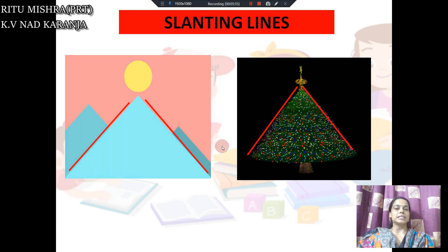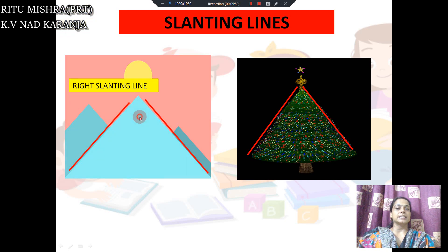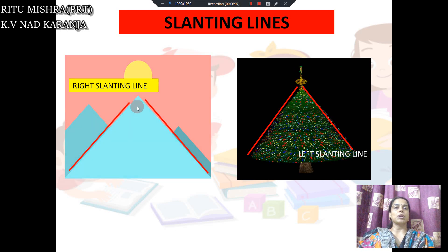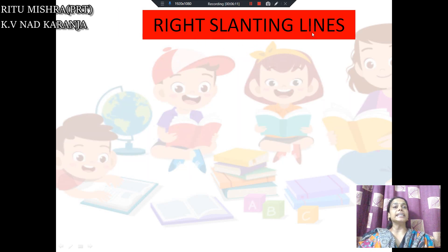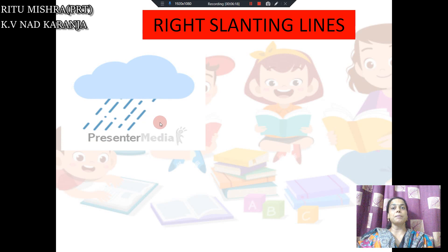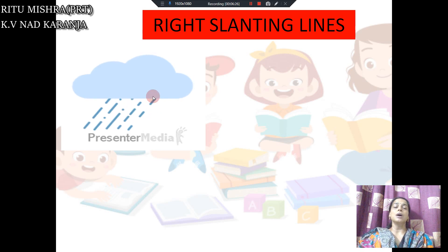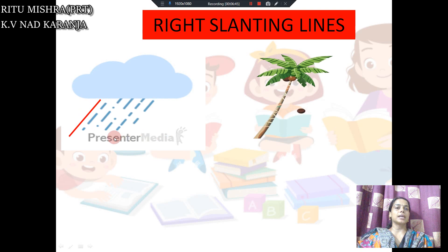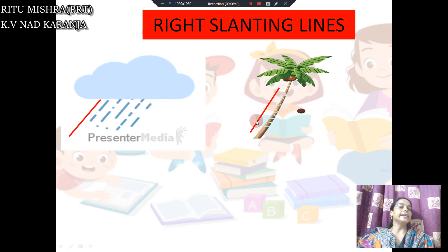Now we will take one type of slanting line at a time. First the right slanting line, then the left slanting line. For the right slanting line — just as we saw the rain pattern earlier, the rain pattern changes depending on which way the wind flows. Here the rain pattern is not straight, it is bent. Now see this example — there is a coconut tree, and this tree is also bent, not straight. The tree we saw earlier was straight, but this one is bent. So if we see this as a line, this is the right slanting line.